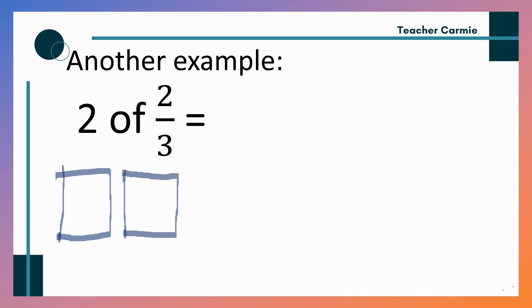So let's have another example, 2 of 2 third. So 2 of 2 third meaning we will draw a whole figure, 2 whole figures. Then, from the multiplier, 2 thirds, so we will divide it into 3 from the denominator of 3. Then the numerator 2, so meaning we will shade the 2 parts.